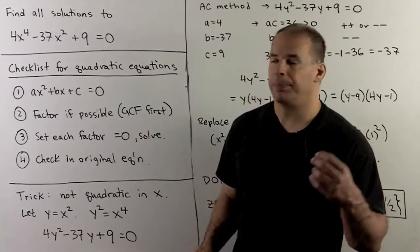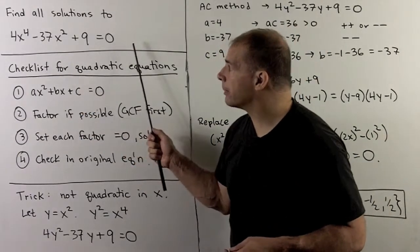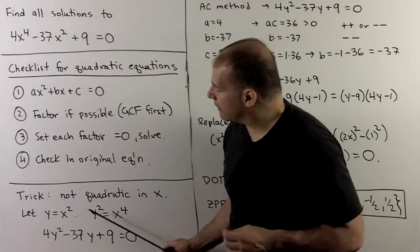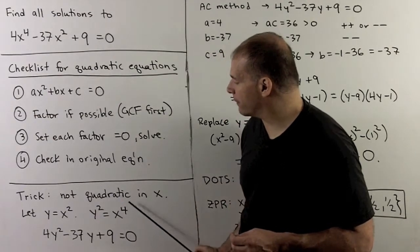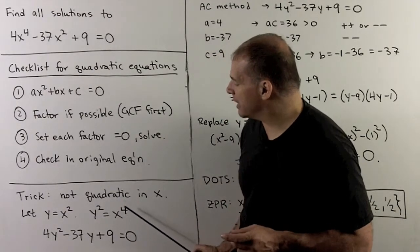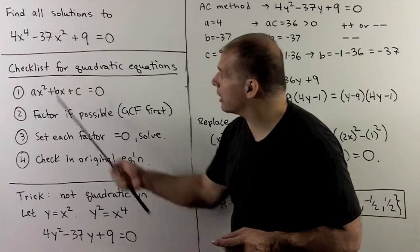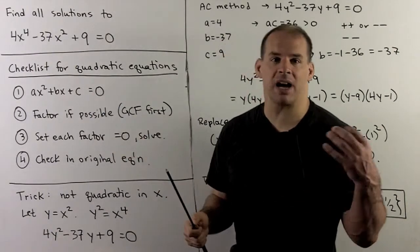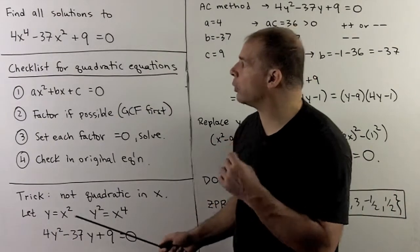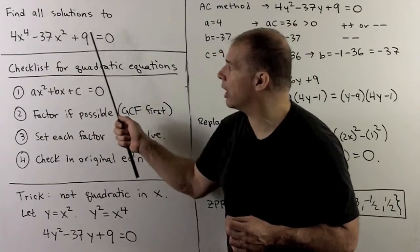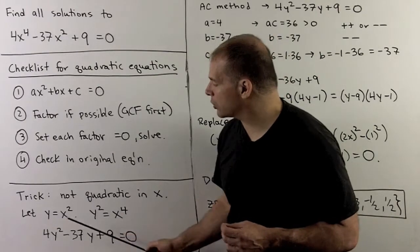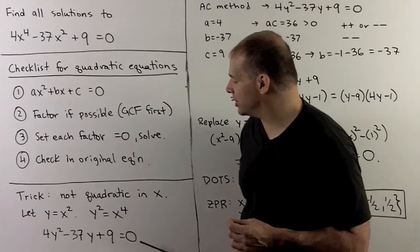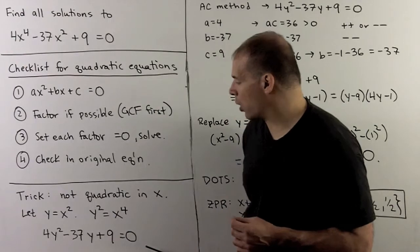Now, for our trick: we know that this is not a quadratic, but if I let y be equal to x squared, then I'll have y squared is equal to x to the fourth power. I can replace the x to the fourth power and the x squared in the equation to get something entirely in terms of y. Our trick here only works because I have no x cubed and no x. That gives a quadratic: 4y squared minus 37y plus 9 is 0. And this, I can work with.